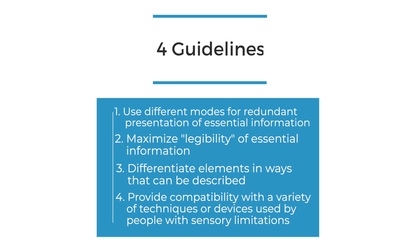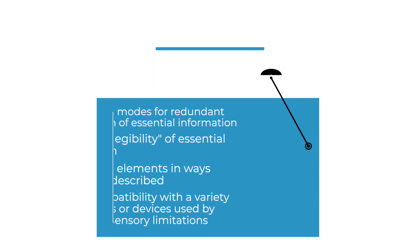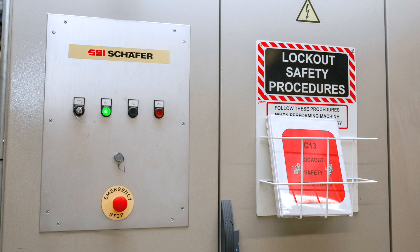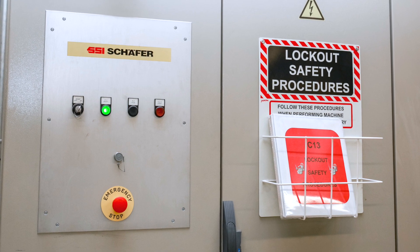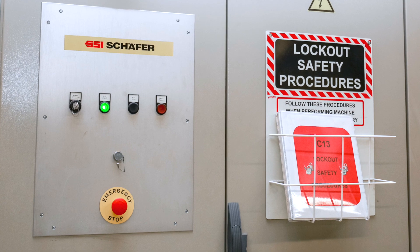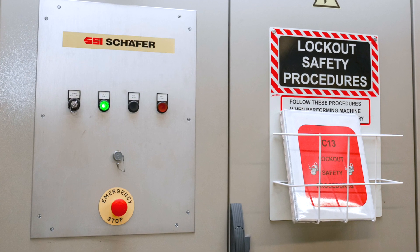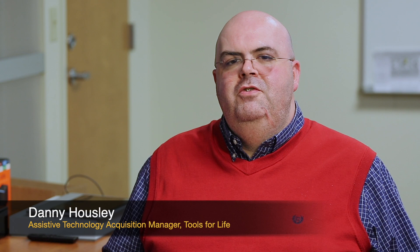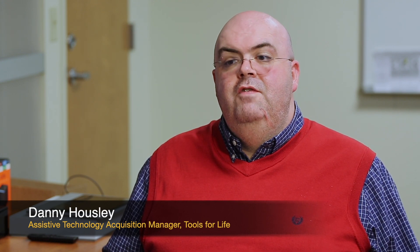The next guideline for perceptible information is to maximize legibility of essential information. This includes using design elements such as contrasts in colors, brightness, textures, and size of information to ensure that the design is usable by people with all sensory abilities. Color and contrast are two of the most important things when it comes to signage, especially for somebody with low vision.